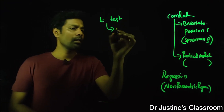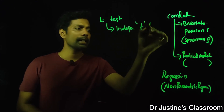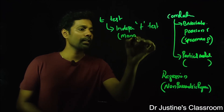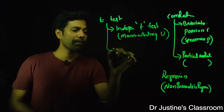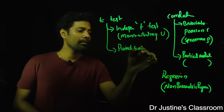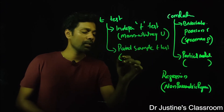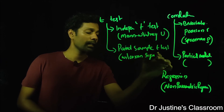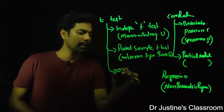For t-tests: the independent samples t-test has the Mann-Whitney U test as its non-parametric alternative. The paired samples t-test has the Wilcoxon signed-rank test as its non-parametric alternative. For the one-sample t-test, tests like the Kolmogorov-Smirnov (KS) test or runs test can be used.